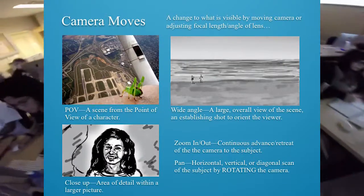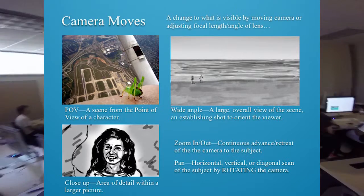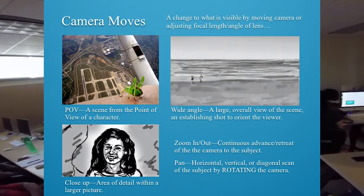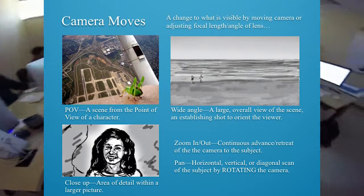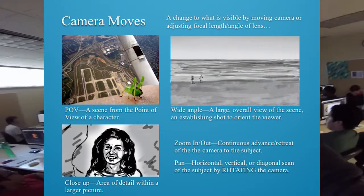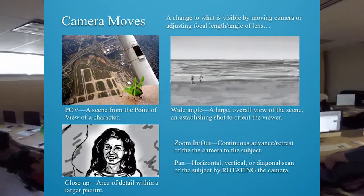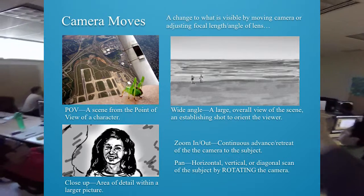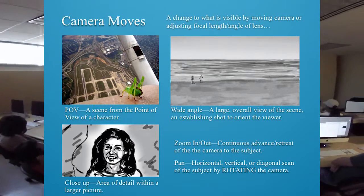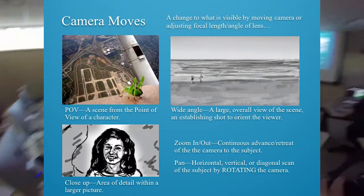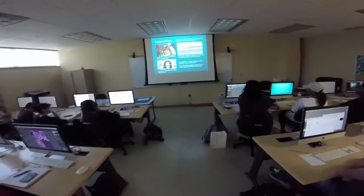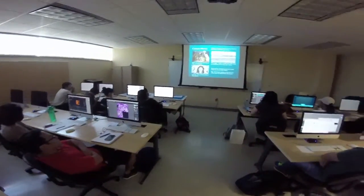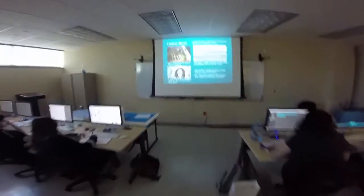Camera moves. A POV shot is a scene from the point of view of a character — or the viewer behind the character. A wide angle shot is a large overall view of the scene, used as an establishing shot to orient the viewer. A close-up is an area of detail within a larger picture, usually of a person. When you zoom in or zoom out, it's a continual advance or retreat of the camera to the subject. A pan is a horizontal, vertical, or diagonal scan of the subject by rotating the camera.